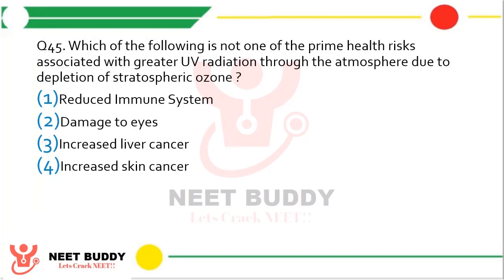Question 45. Which of the following is NOT a prime health risk factor associated with greater UV radiation due to depletion of stratospheric ozone: reduced immune system, damage to eyes, increased liver cancer, or increased skin cancer? The correct answer is option 3 — increased liver cancer. If UV radiations increase, there is no risk of increased liver cancer.